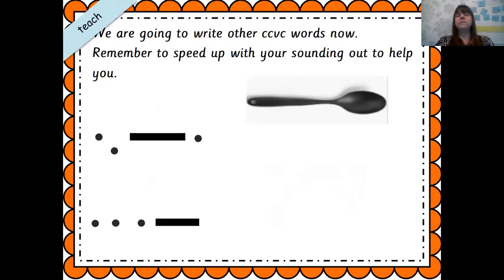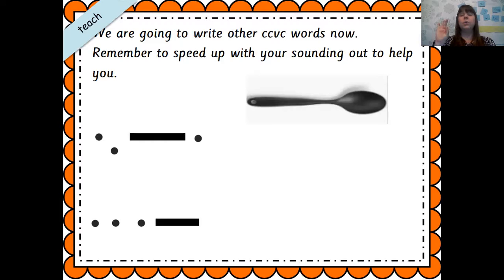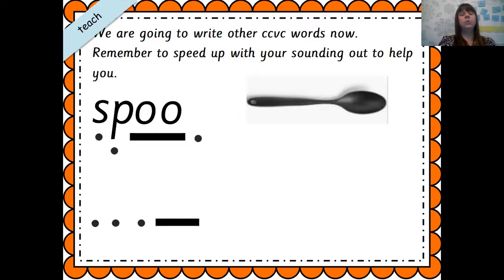The next picture is spoon. To help you spell it, remember you have to sound the word out first — spoon. It's got four sounds but five letters. As you sound it out, write it on your board or paper. As soon as you hear the sounds, spell them out. S-P-OO-N. Did you get all those sounds? Check your board or paper — if there's anything wrong, just correct it.